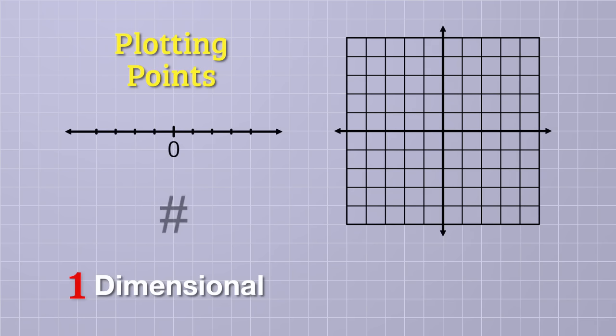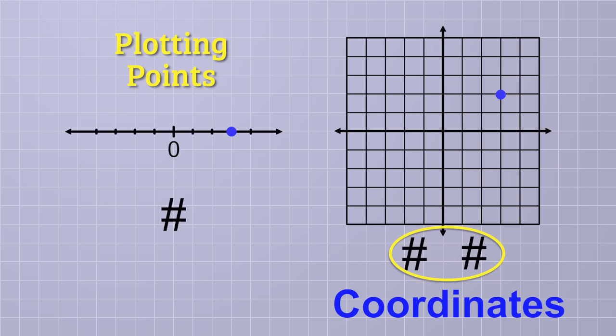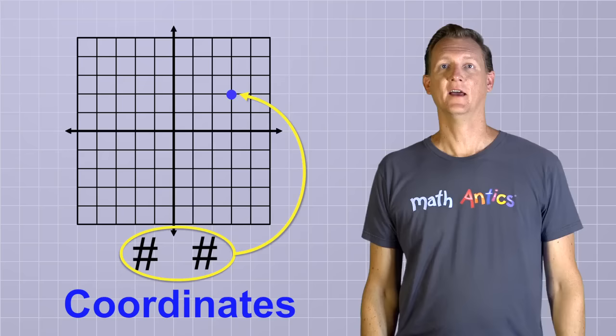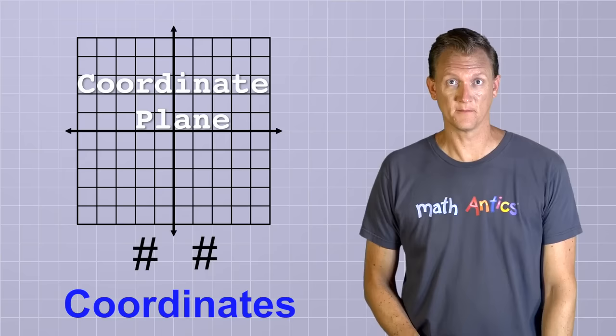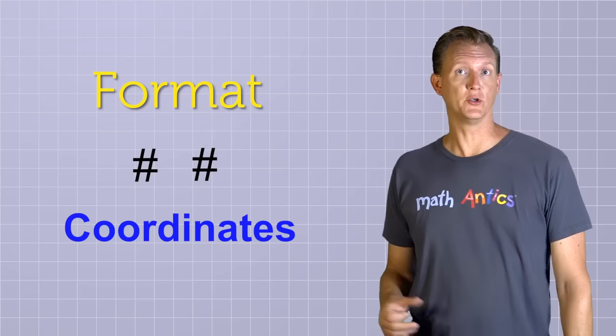With the one-dimensional number line, plotting points was easy. You just needed one number to tell you where to plot a point. But with the two-dimensional number plane, you actually need two numbers to plot each point. These two numbers are called coordinates because they're the same rank or order, and they work together to specify the location of a point on the number plane. In fact, that's why the number plane is often referred to as the coordinate plane. It's the stage for plotting coordinates.